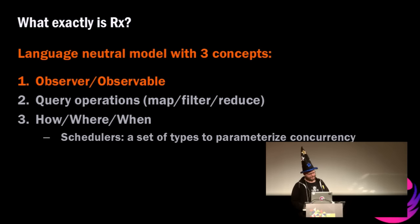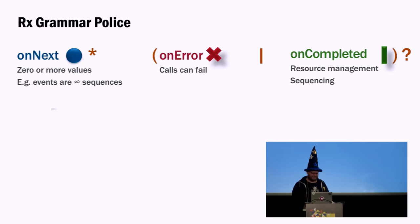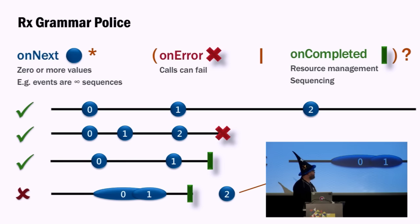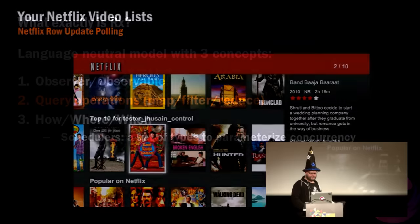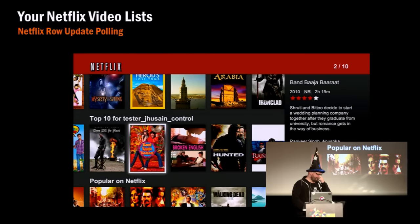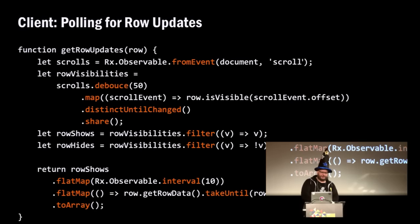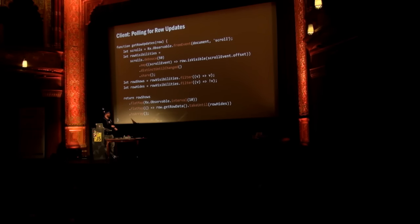Rx is really three basic concepts: the observer and the observable. We have onNext, onError, and onCompleted — where we can have an infinite value, a couple values and an error, or a couple values and an end. You can't have overlapping values or things that happen after the fact. So we have map, filter, and reduce — but how do we use it in something usable?